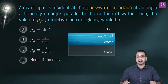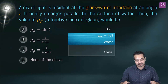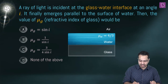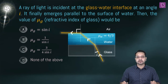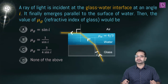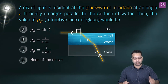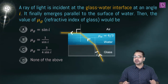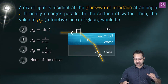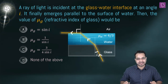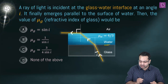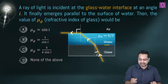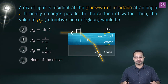A ray of light is incident at the glass-water interface at an angle i, and it finally emerges parallel to the surface of water. We need to find the value of μ_G, the refractive index of glass. There are three different media: glass, water, and air. So there are two boundaries — one is the glass-water boundary and another is the water-air boundary.